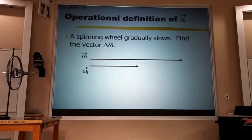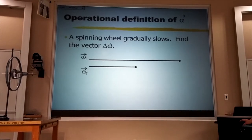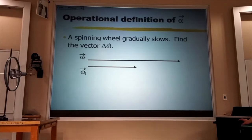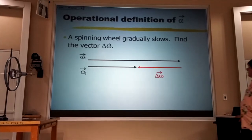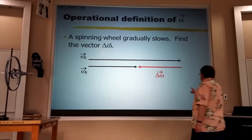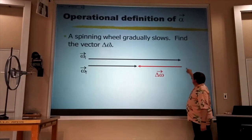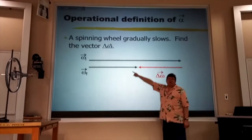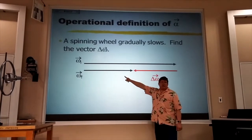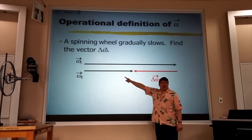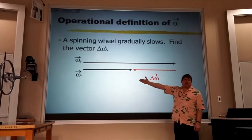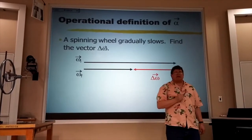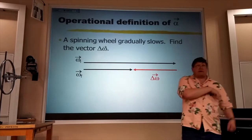Now, the question is, how much did it change? Well, the change vector is what I have to add to the initial — there's the plus sign right there — what I have to add to the initial to turn it into the final omega. I'm trying to make a long vector short, so I've got to add something in the opposite direction.